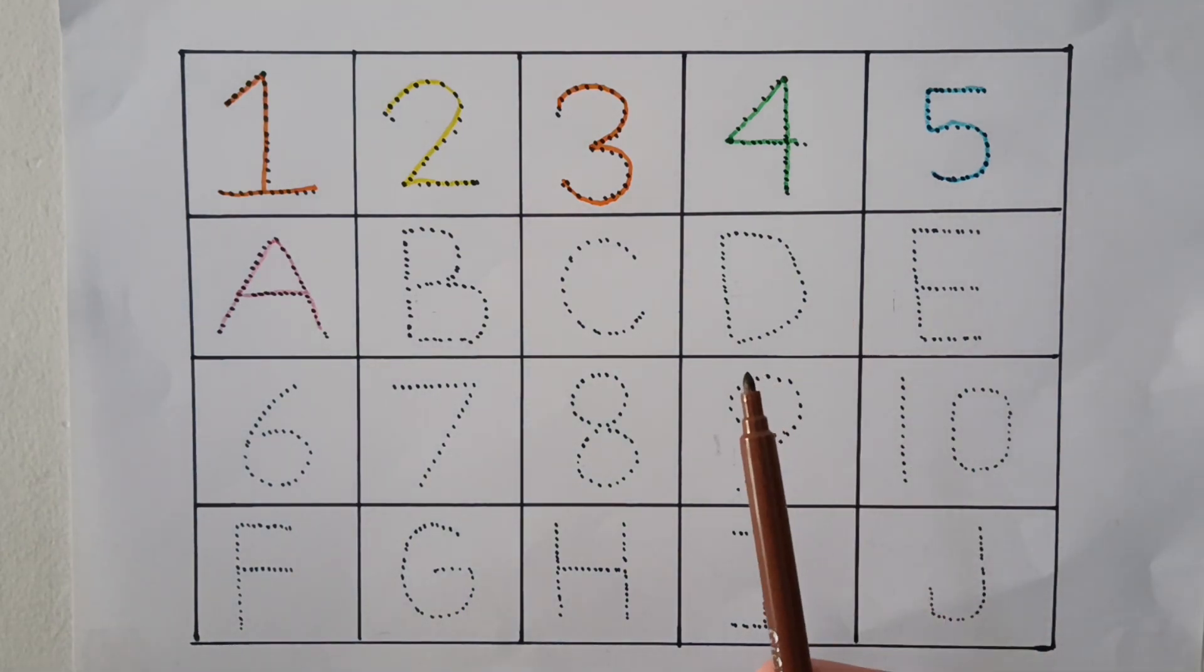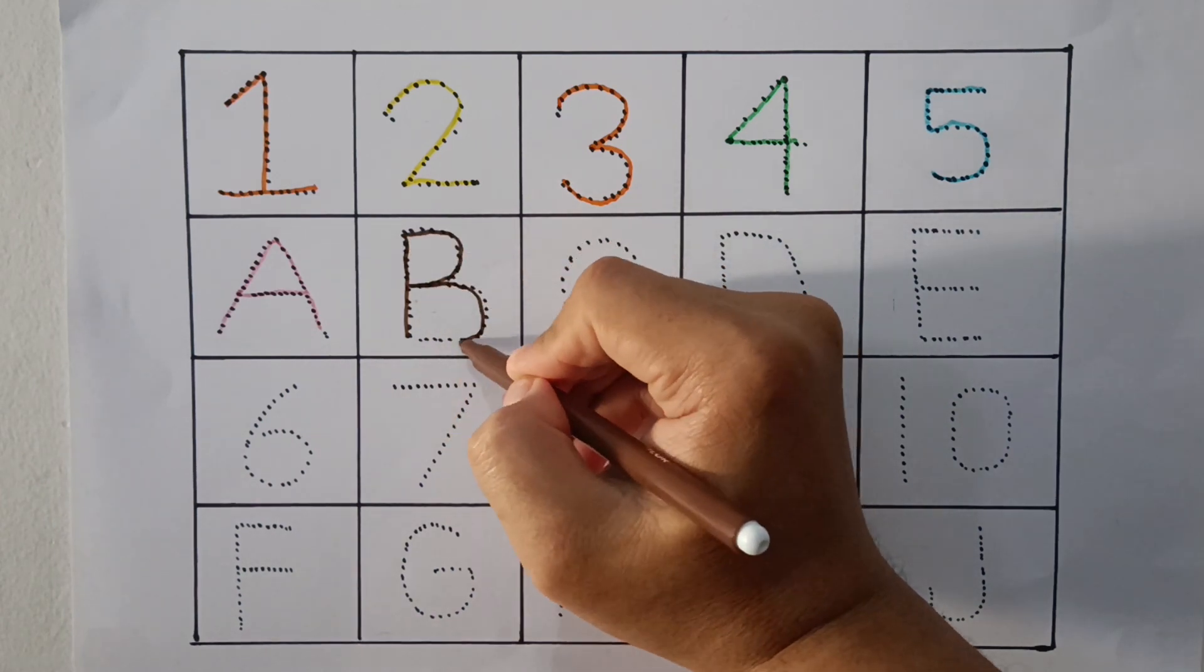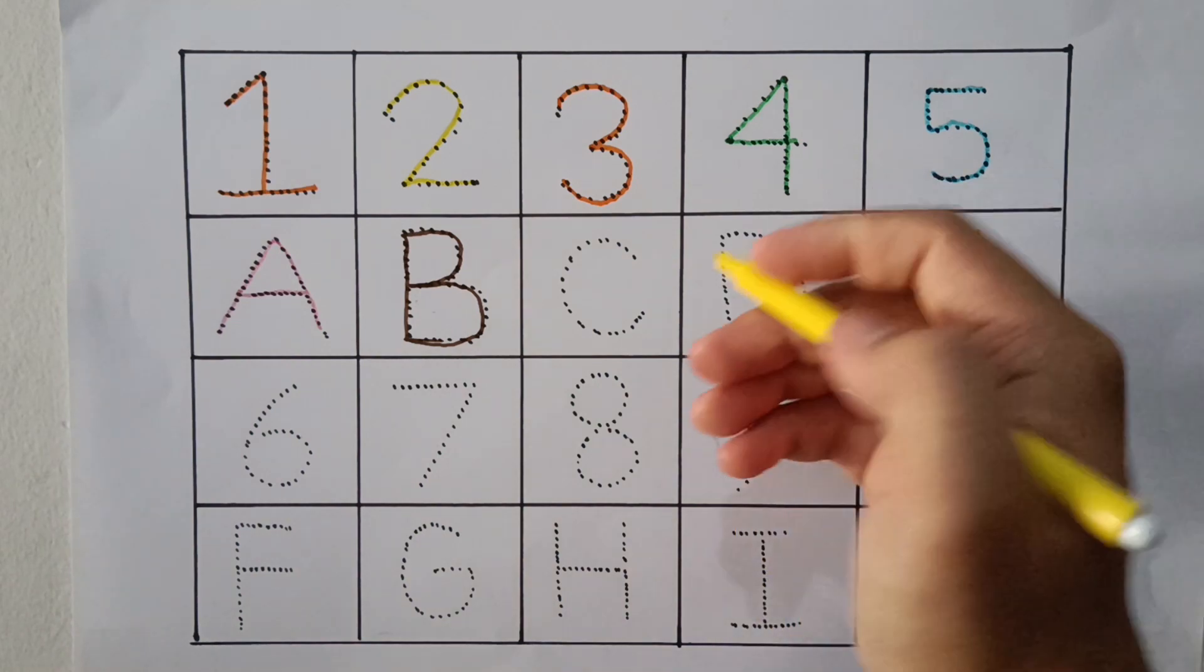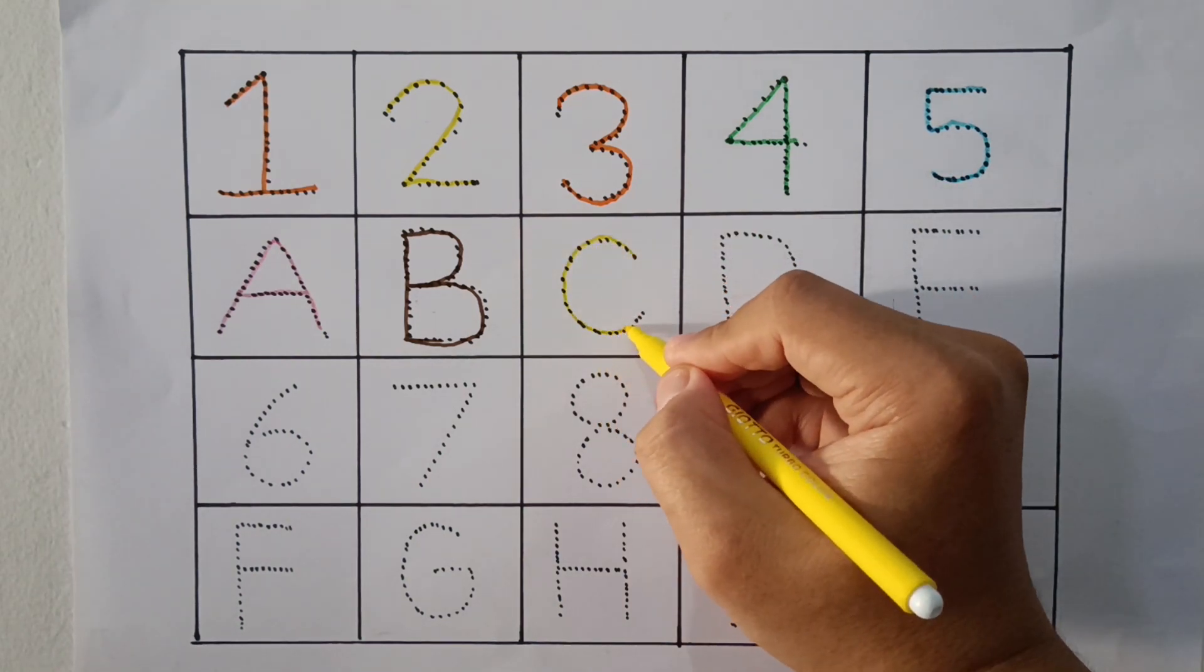Brown color B, B for Wall. Yellow color C, C for Cat.